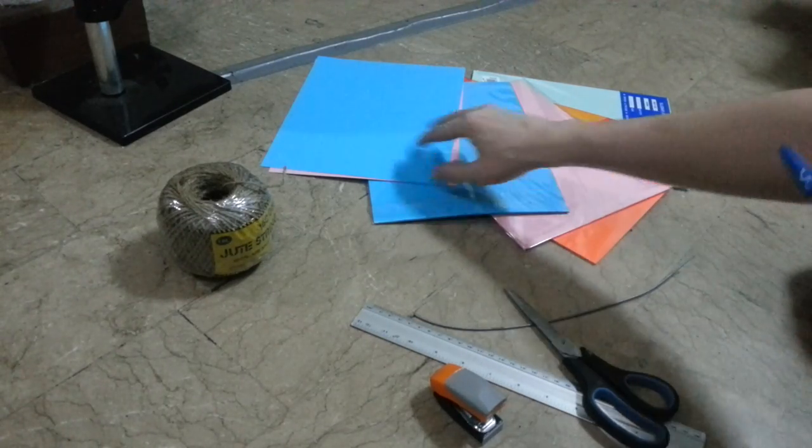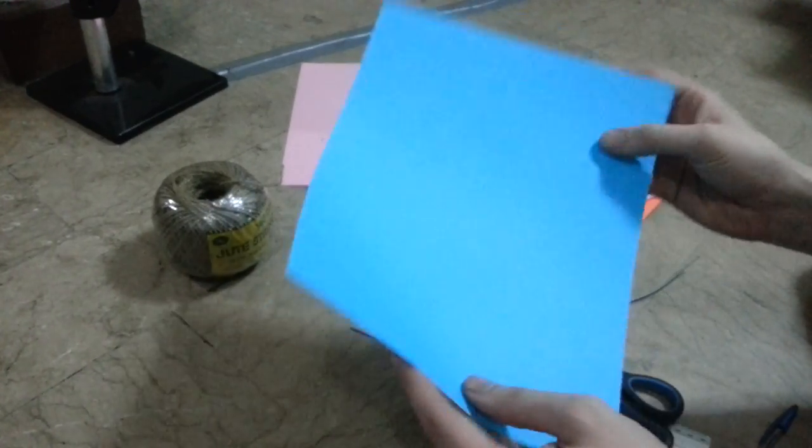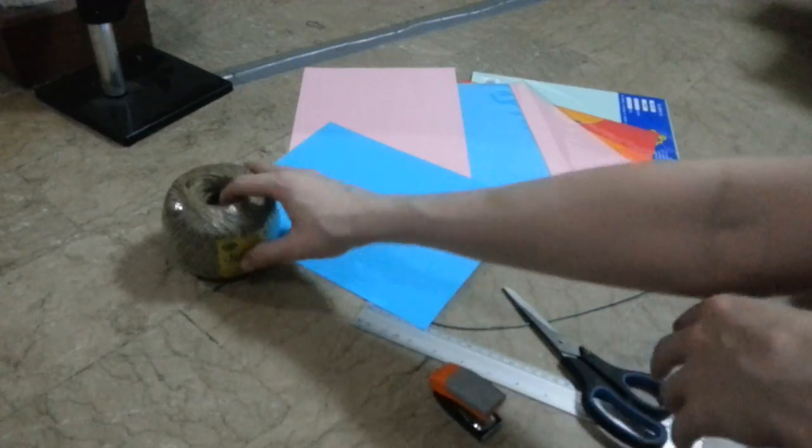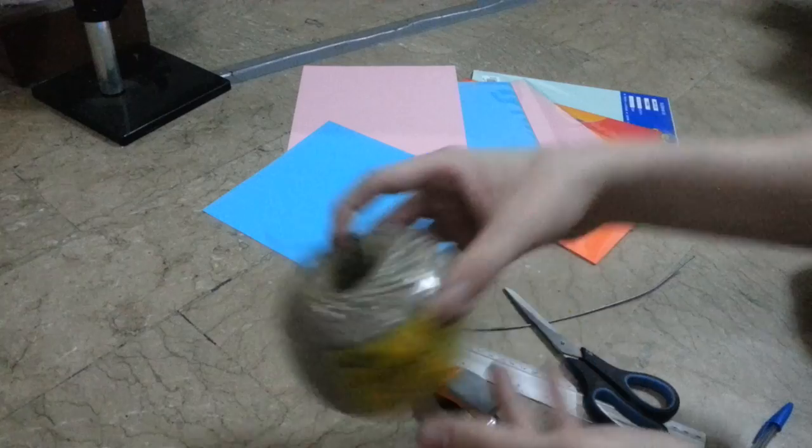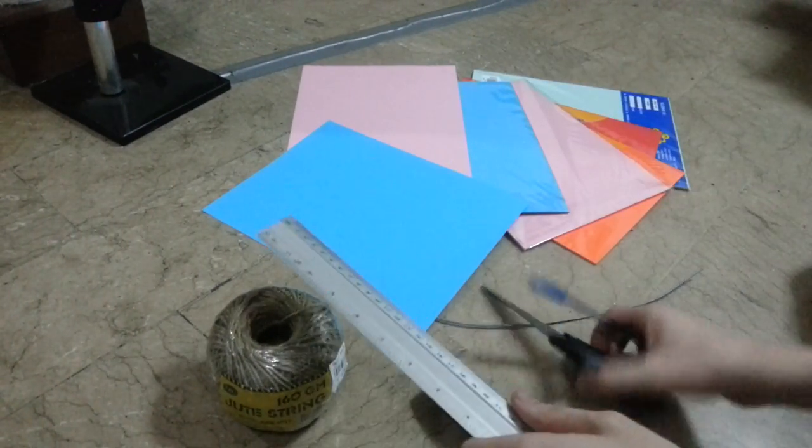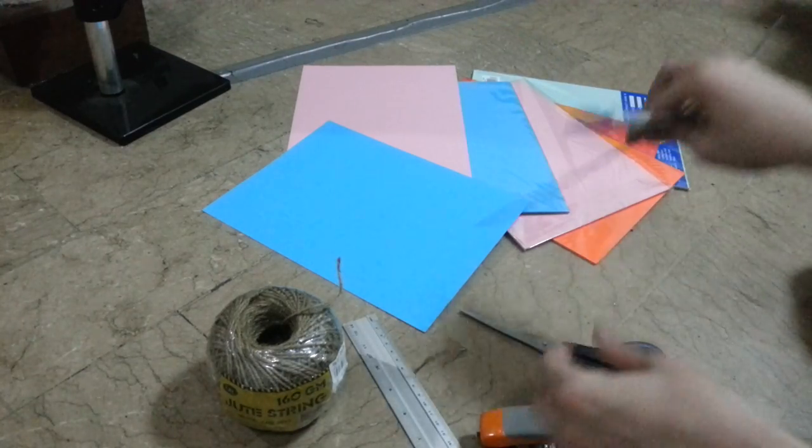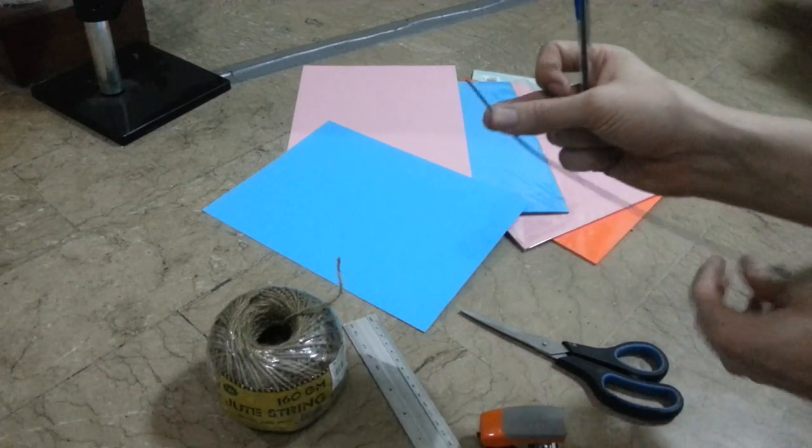So this is what you need. You need some card. You can use paper but card is going to last a little bit longer. Different colors depending on what your preference is. Some string. I'm just using some twine like string here. A ruler, a pen, a pair of scissors, a stapler and ideally just a piece of wire that will help you poke the string through the hole.